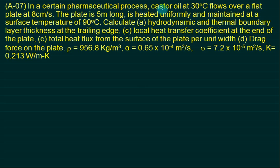In a pharmaceutical process, castor oil at 30 degrees Celsius flows over a flat plate at 8 cm per second. The plate is 5 meters long and is heated uniformly. We need to find the thermal boundary layer thickness at the trailing edge, the local heat transfer coefficient at the end of the plate, the total heat flux from the surface per unit width, and the drag force. Density, alpha, nu, and k are given.